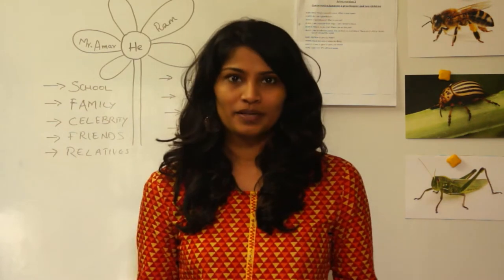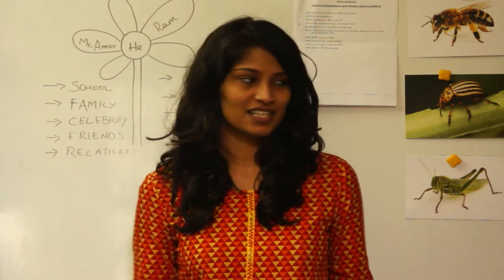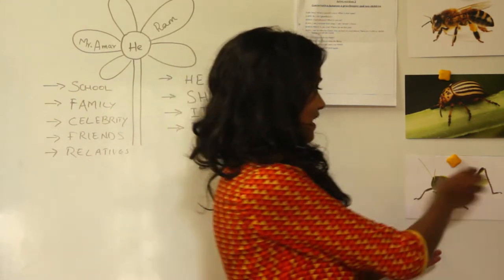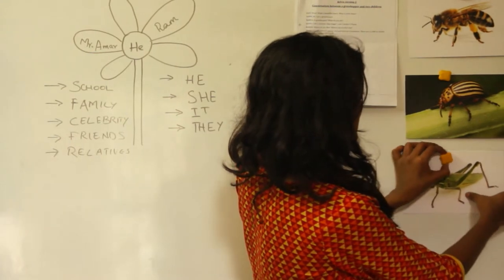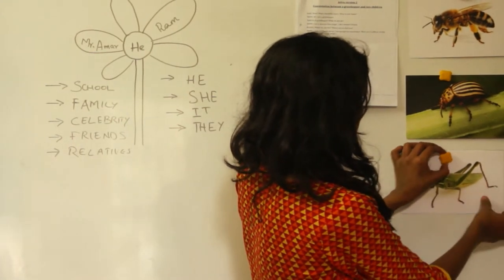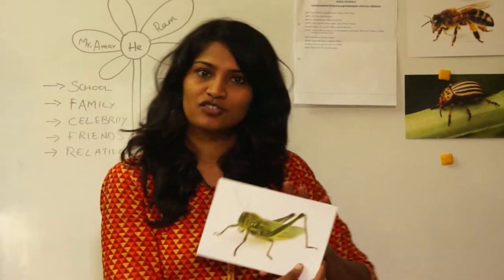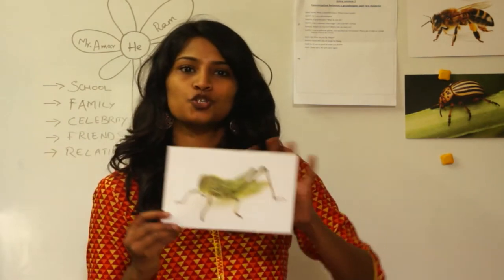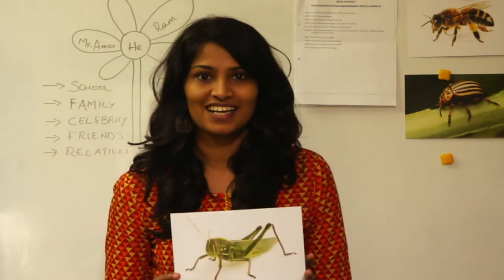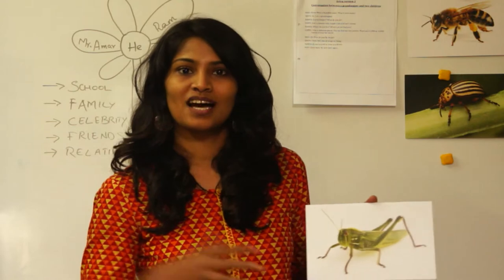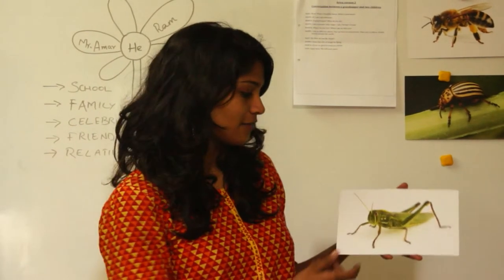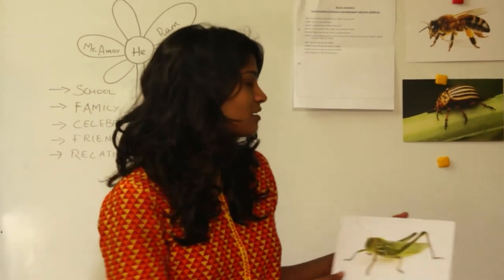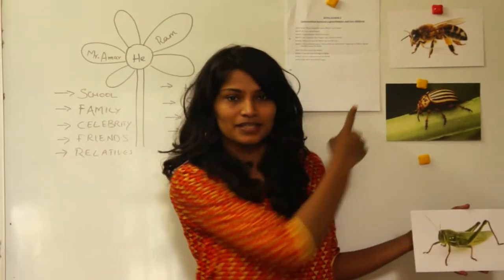For the opening, we are going to use flashcards. We have three flashcards for this session. We are going to show them the flashcards and ask them what these insects are — this is how we introduce the theme to the class. We have a grasshopper, a beetle, and a honeybee.